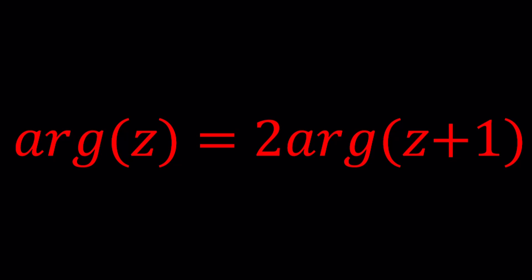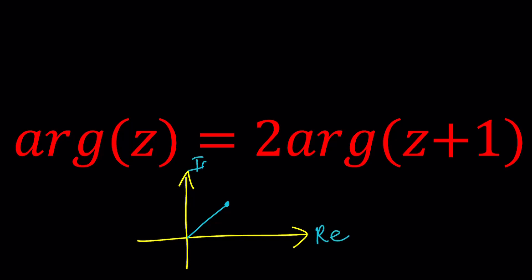If z is a complex number, we can go ahead and plot it in the complex plane. When you connect z to the origin, it forms an angle with the positive real axis, and that angle is called the argument — let's call it theta. The distance from z to the origin is the absolute value of z, also known as the modulus.